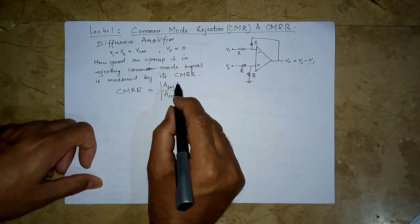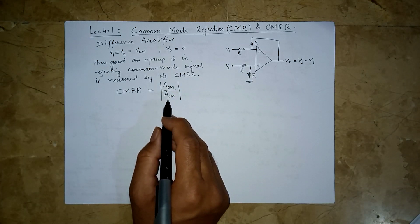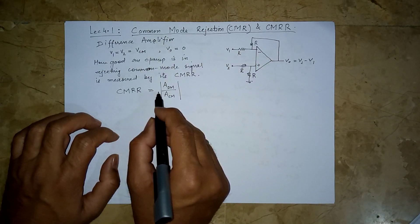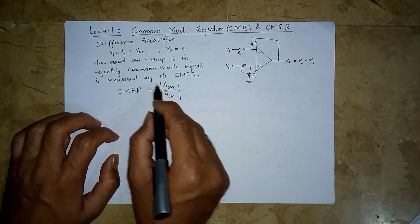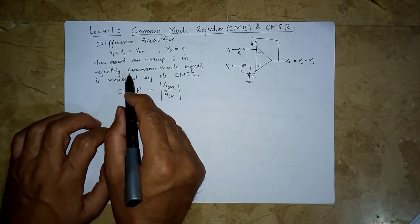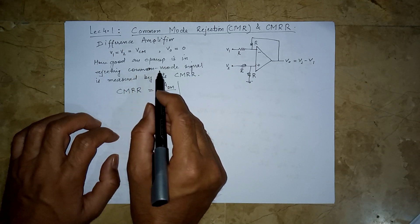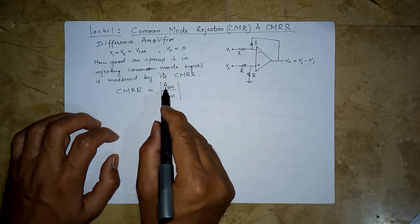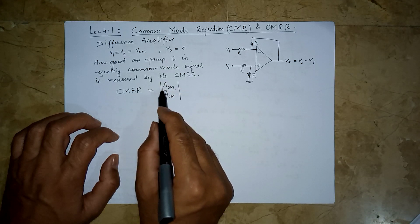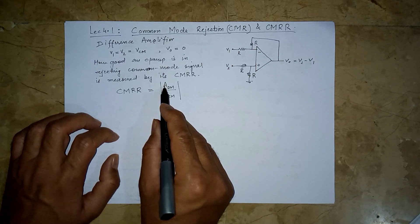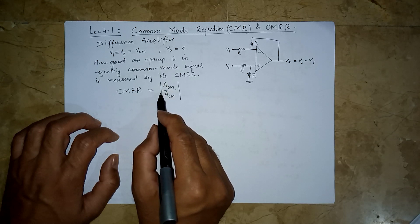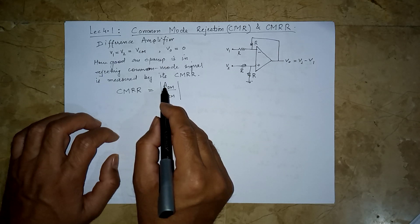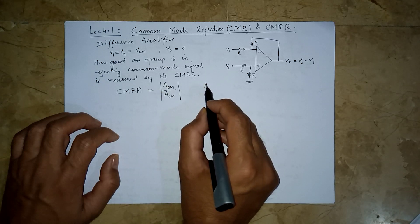And how good it is when it amplifies a common mode signal. So the common mode rejection ratio is a measure to verify how good a difference amplifier is. It is basically the ratio of the gain in the differential mode to the gain in the common mode.